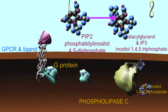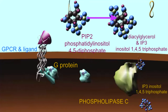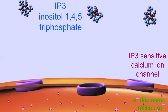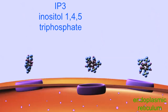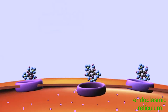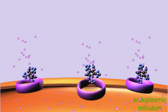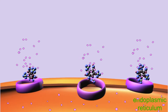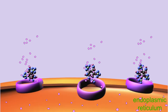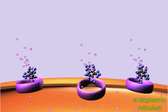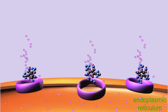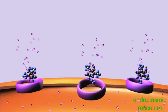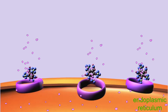IP3 can then interact with a number of effectors throughout the cell, including calcium channel proteins on the endoplasmic reticulum. Once IP3 binds to the ER channels, calcium is released. The ER is the major intracellular store of calcium.